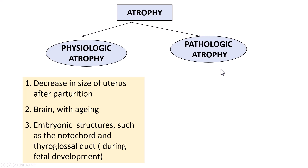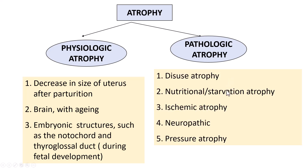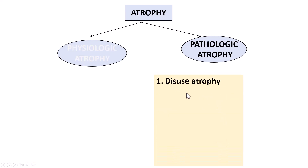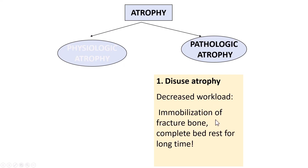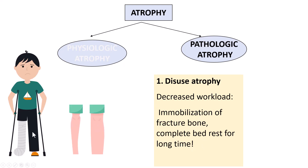Pathologic atrophy means there are underlying pathological causes for the given tissue or organ to be atrophied. The types of pathologic atrophy include disuse atrophy, nutritional or starvation atrophy, ischemic atrophy, neuropathic atrophy, and pressure atrophy. Disuse atrophy — as the name says, if you do not use that particular tissue, then that organ or tissue will be atrophied. For example, immobilization of a fractured bone resulting in complete bed rest for a longer duration of time leads to decreased workload, and over time the muscles tend to get atrophied.